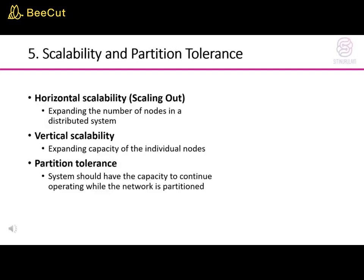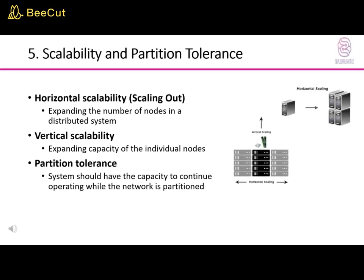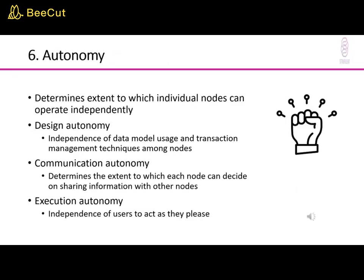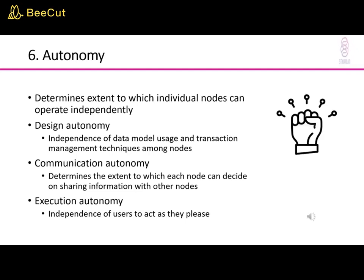Horizontal scalability, or scaling out, involves expanding the number of nodes in a distributed system. Vertical scalability involves expanding the capacity of individual nodes. Partition tolerance means the system should continue operating while the network is partitioned. Autonomy in a distributed database determines the extent to which individual nodes can operate independently, including design autonomy, communication autonomy, and execution autonomy.